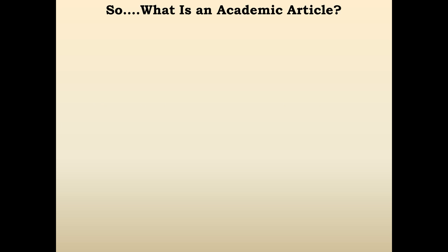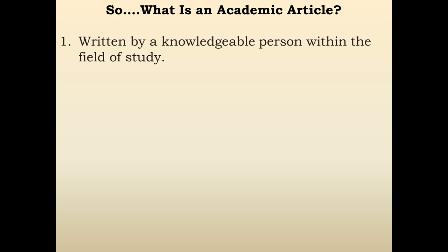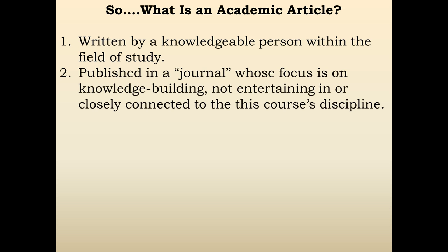So what is an academic article? It's written by a knowledgeable person within the field of study — usually somebody with an advanced degree who has studied the particular topic for years or even decades. It's published in a journal, meaning a publication whose focus is on knowledge building, not entertaining. We're looking at something like the Journal of American Literature or the Journal of Television and Communication. The Wall Street Journal is not a journal in this context — that's a news publication written by journalists, not scholars.